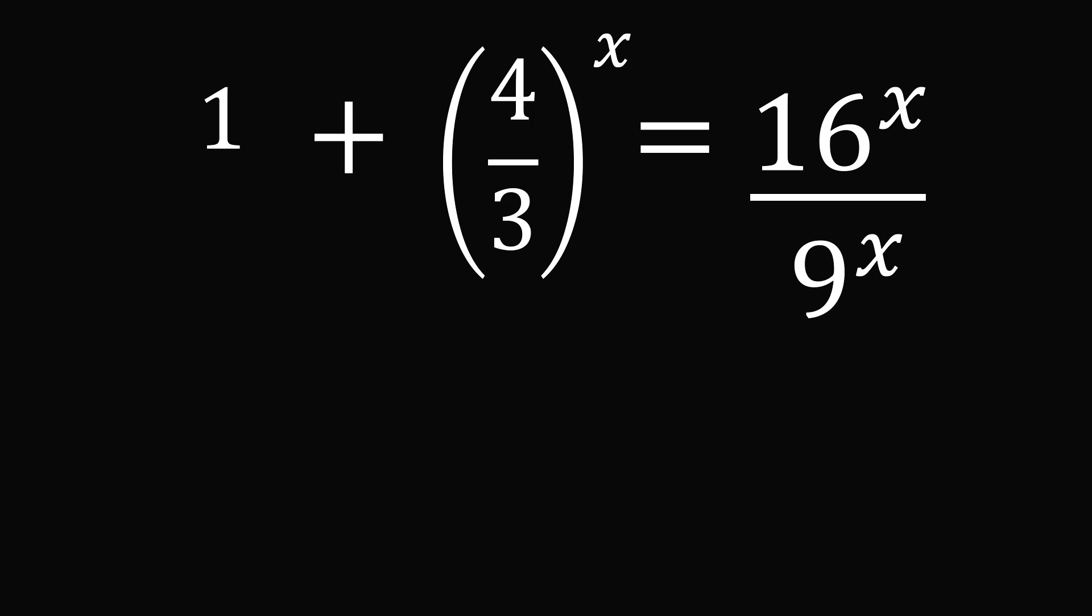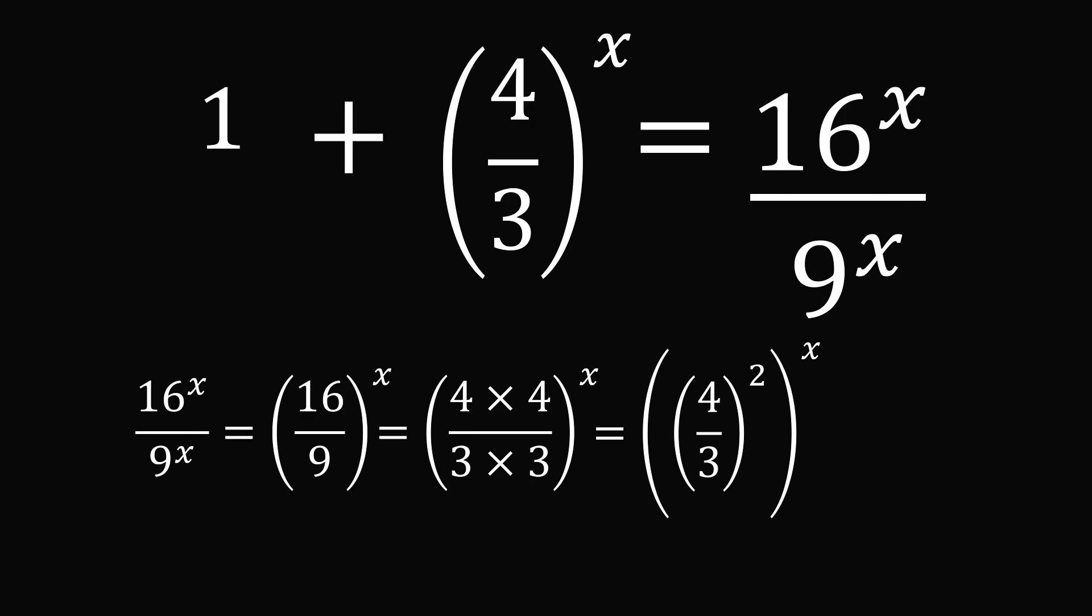Let's finally simplify the last term. We have 16^x divided by 9^x. This will equal the fraction (16/9)^x. We can factor 16 as 4 × 4, and 9 equals 3 × 3. We can't eliminate any common factors, but we do have 4/3 times 4/3. So this equals (4/3)^2 raised to the power of x. We have an exponent to an exponent, so we can multiply the exponents. This equals (4/3)^(2x). Let's substitute this in on the right side.